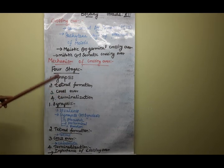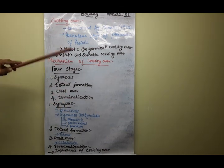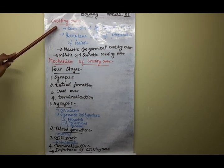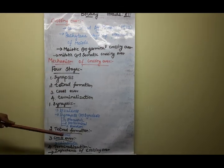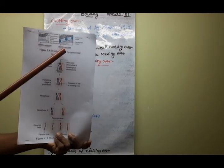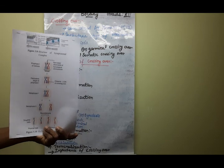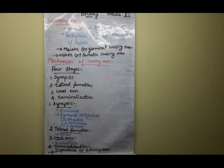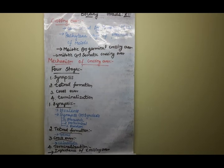For the next class, I am going to give two five-mark questions and one three-mark question. First, define crossing over. Second, explain the mechanism of crossing over — you must include the diagram. Third, importance of crossing over or significance of crossing over. You must prepare and learn these questions. Thank you, students, thank you very much.